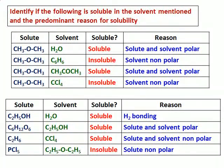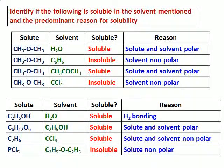Let's go to the second set. The first compound, solute C2H5OH in water — it will be soluble. One reason is it can form hydrogen bonding; both can form hydrogen bonding with each other, and both are also polar. The next compound, sugar — glucose, C6H12O6 — in solvent C2H5OH, it will be soluble because both are polar. Then C2H6 and CCl4 — both are non-polar and hence they will be soluble in each other.